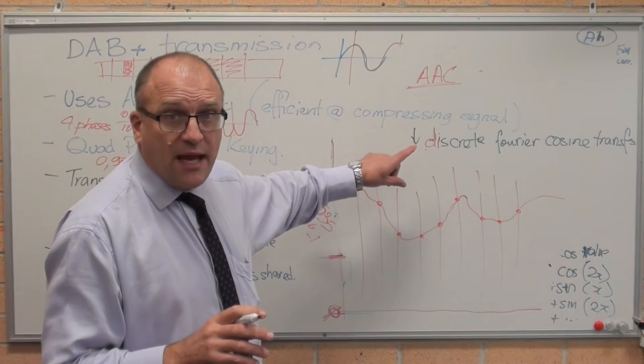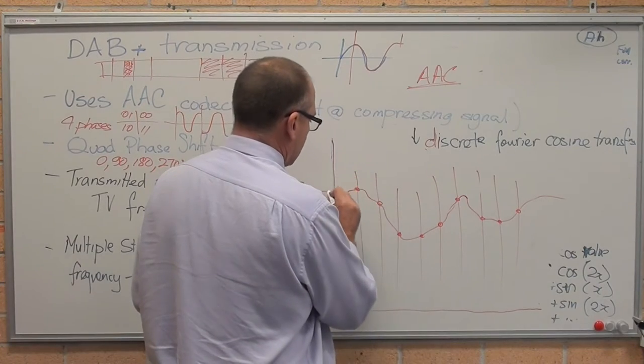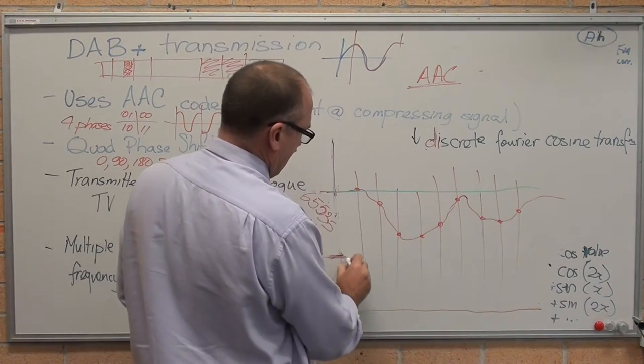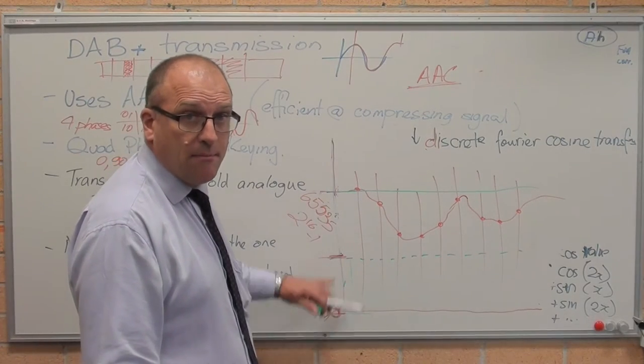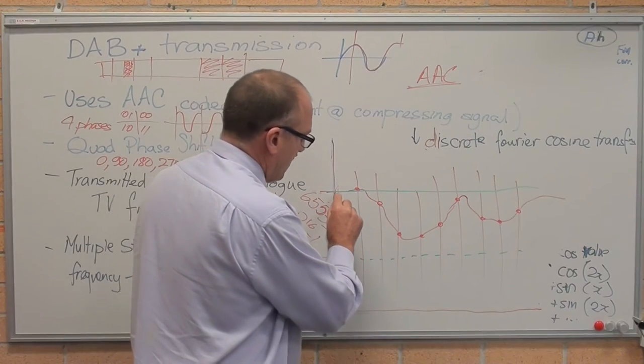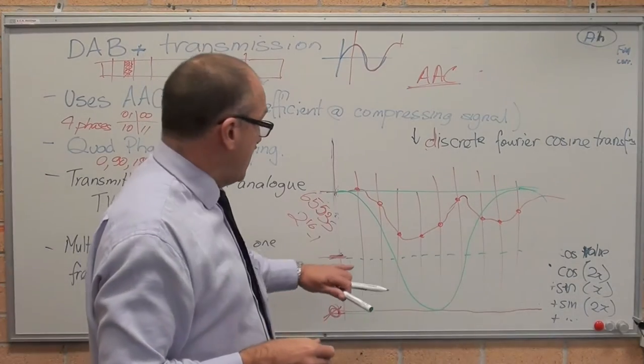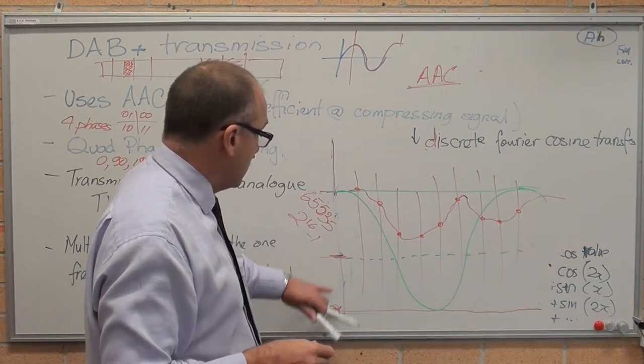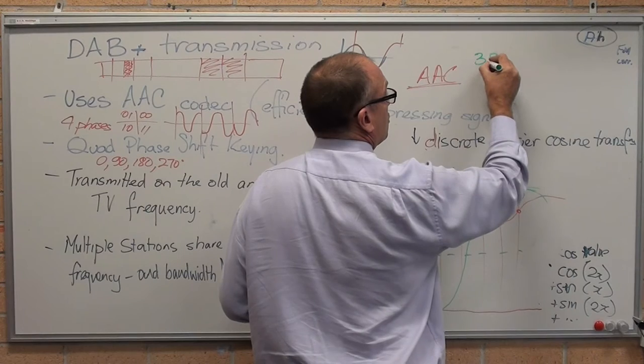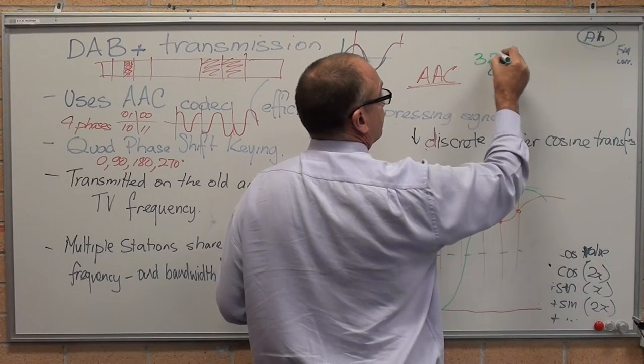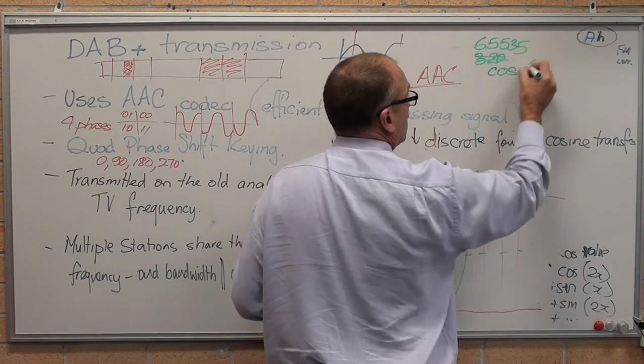AAC produces a discrete Fourier transformation. How the Fourier transformation works is, let's pick a cos value. Let's say 32,000 is the average. Zero is the minimum. 65,000 is the maximum. A cos function looks something like this. And down it goes again. This however, as you can see, it's 32,000. So the value here is cos. It might be 32,000. It's actually 65,535 cos of x.